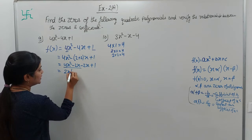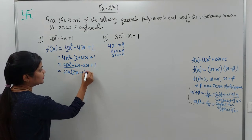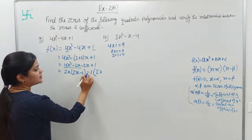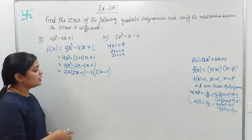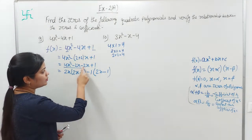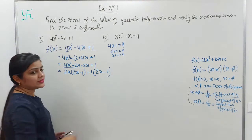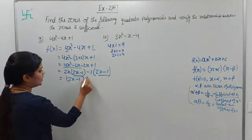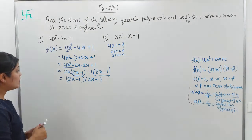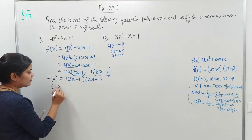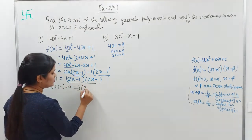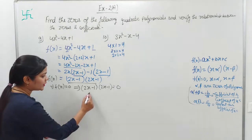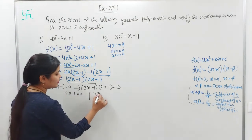From the first group, 2x is common — giving 2x(2x - 1). From the second group, -1 is common — giving -1(2x - 1), because minus times minus is plus, giving +1. So the common factor is (2x - 1), and the product is (2x - 1)(2x - 1). For zeros of the polynomial, f(x) = 0, so (2x-1)(2x-1) = 0. Setting each factor to zero: 2x - 1 = 0, giving x = 1/2, and again 2x - 1 = 0, giving x = 1/2.